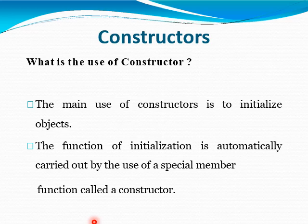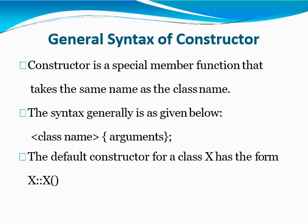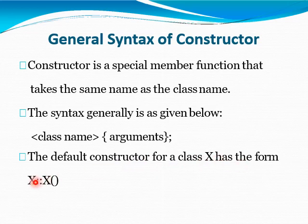The main use of a Constructor is to initialize the object. The function of initialization is automatically carried out by a special member function called a Constructor. A Constructor is automatically called when an object is created. A Constructor is a special member function that takes the same name as the class name. The syntax is the class name followed by an argument. For example, if the class is X, then X is also the Constructor.